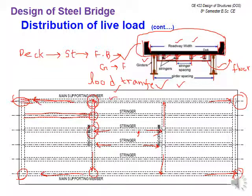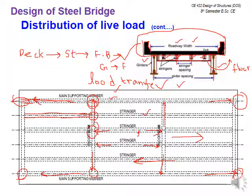Longitudinal members — stringers, bridge deck, and main girders — span along the direction of traffic flow. The floor beam is a lateral member. Whatever was discussed in the previous slide applies to members placed longitudinally, spanning along the length of the bridge.